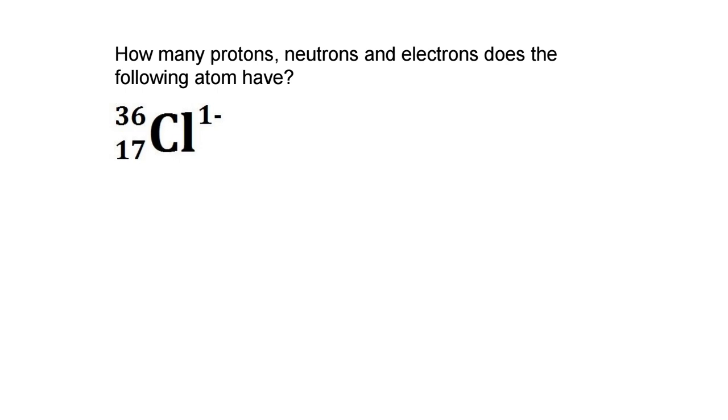So how many protons, neutrons, and electrons does this atom have? We've got chlorine 36 so protons 17. That's what's making it a chlorine atom.